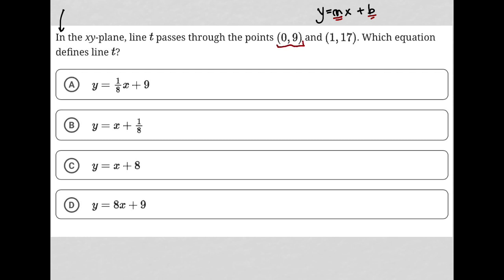We are provided with the y-intercept, right? The y-intercept is always the y value where x is equal to 0. So that's provided for us here. We know that when x is 0, y is 9, which means that b is equal to 9.